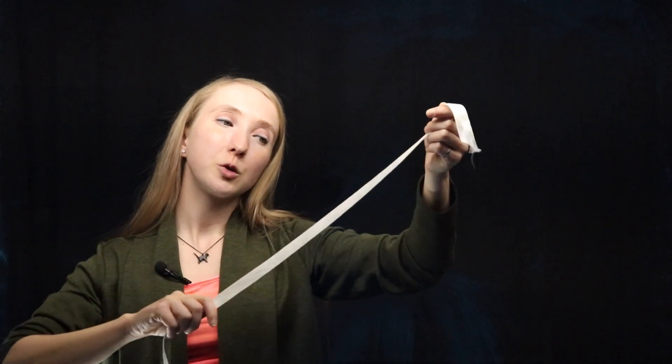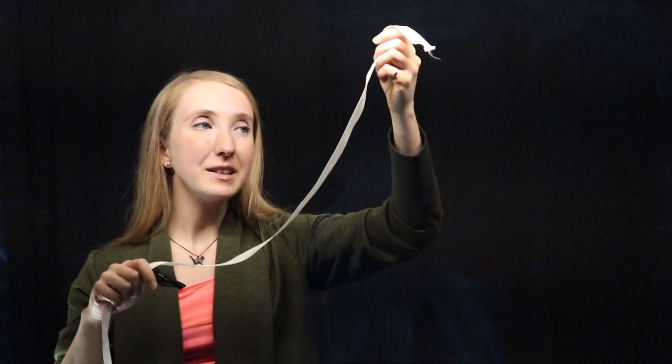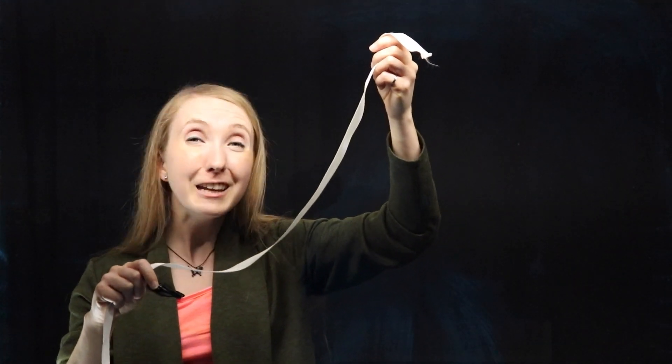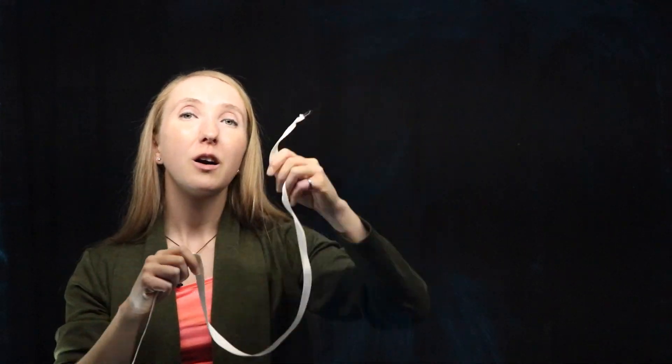So under a distributed load, our cable forms a curve, which means that it has a constantly changing slope. So our overall tension will also be changing, while our horizontal component remains constant.